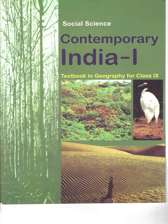The Peninsular Plateau is a stable landmass composed of old crystalline, igneous and metamorphic rocks. It was formed due to the breaking and drifting of the Gondwana land, thus making it a part of the oldest landmass. The plateau has broad and shallow valleys and rounded hills. This plateau consists of two broad divisions, namely the Central Highlands and the Deccan Plateau. The part of the Peninsular Plateau lying to the north of the Narmada River, covering a major area of Malwa Plateau, is known as the Central Highlands.